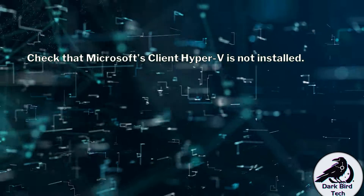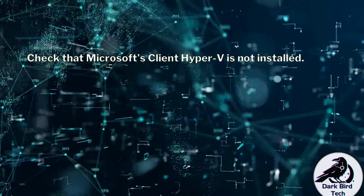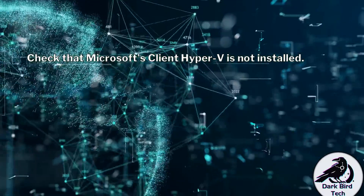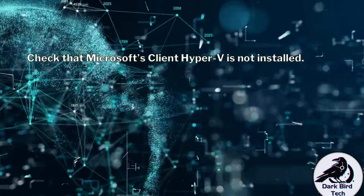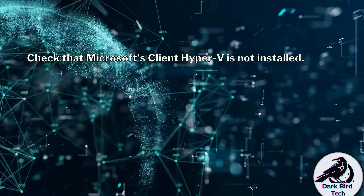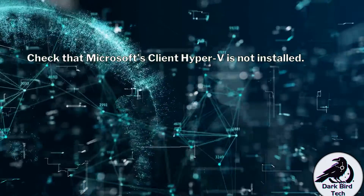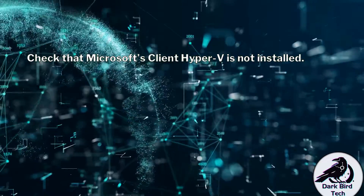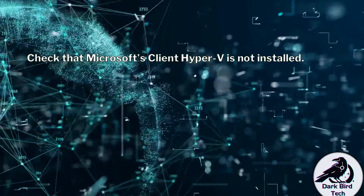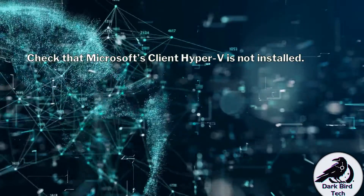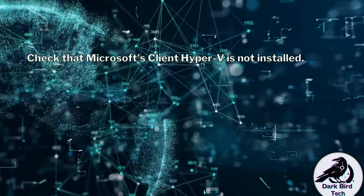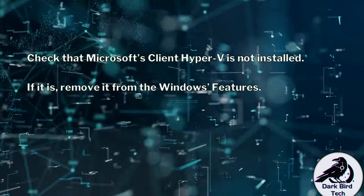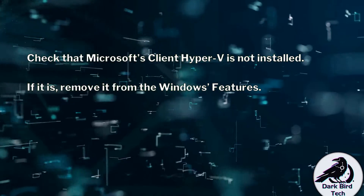The next thing you want to do is make sure that Microsoft's Client Hyper-V is not installed. If you're using Windows 10 or 11 Professional or Enterprise Edition, you have the option of Client Hyper-V. The problem is, Client Hyper-V causes a conflict with VirtualBox. Under normal circumstances, when both are installed, they prevent each other from running 64-bit VMs, and the Huawei appliances that ENSP installs into VirtualBox are 64-bit VMs. So if it is installed, go to the control panel and remove it from your features. I'm going to show you how now.